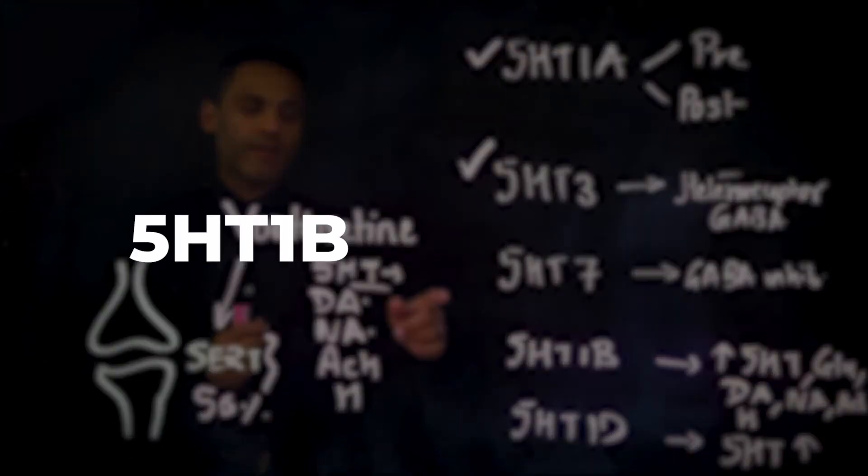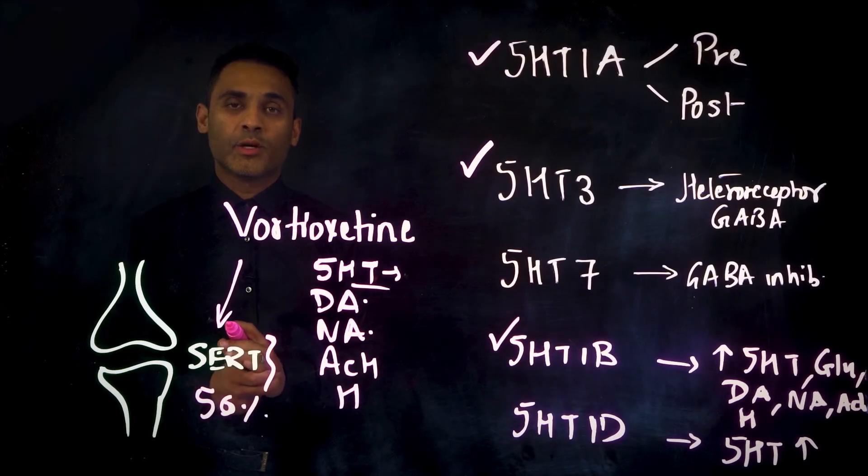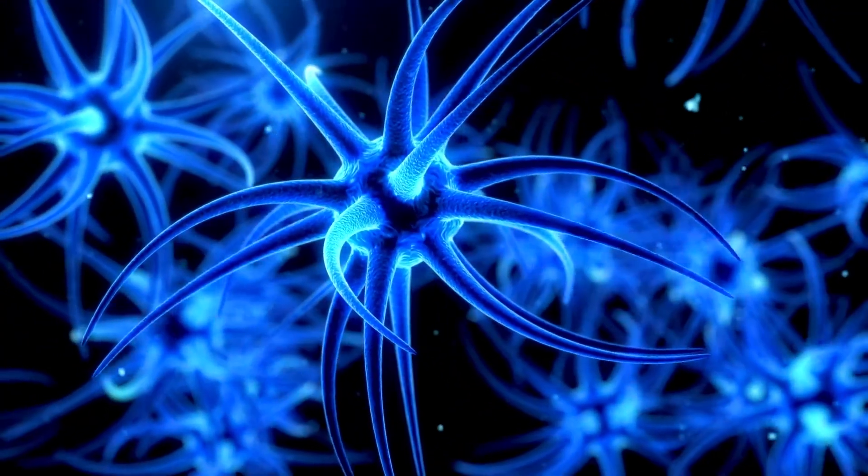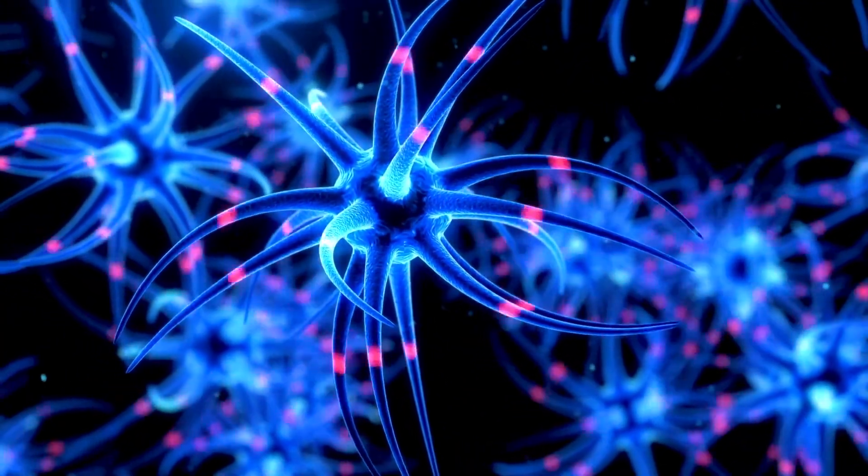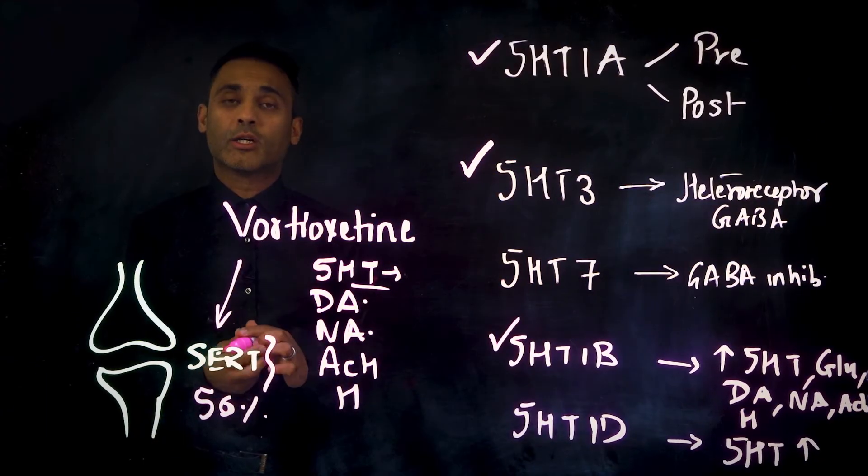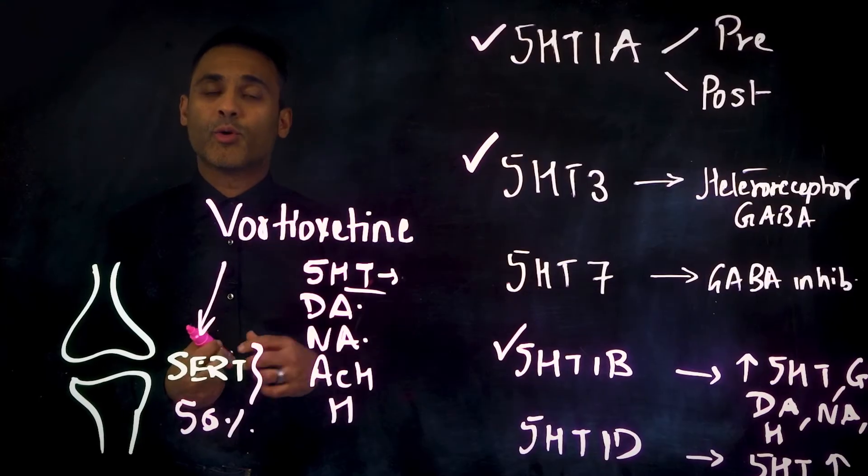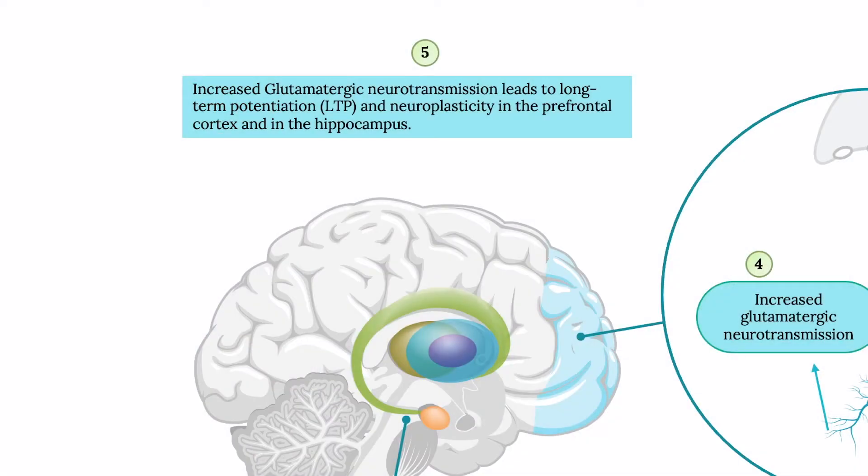Next, we have 5-HT1B partial agonism, which has the cumulative effect of increasing serotonin, glutamate, dopamine, noradrenaline, acetylcholine, and histamine. We know that glutamate also has pro-cognitive effects because it plays a very important role in prefrontal cortex cognition.